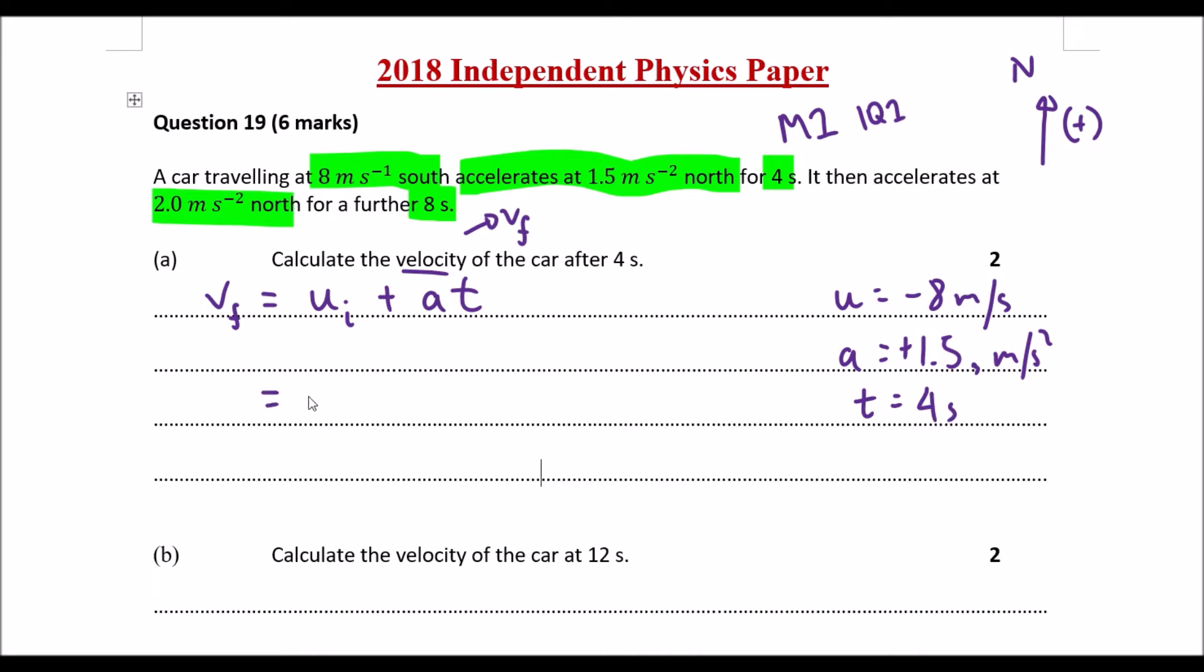So if I do my substitution, negative 8 plus positive 1.5 times 4, let's plug it into our calculator. The velocity we have at this point is negative 2 meters per second. Essentially, we're moving 2 meters per second south at this point here. That goes through that question.